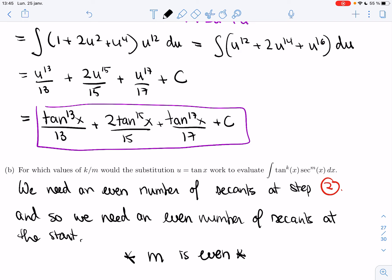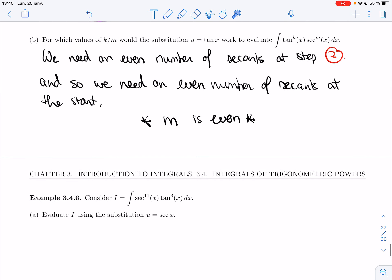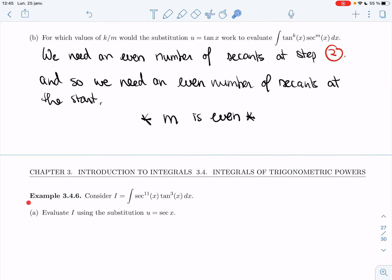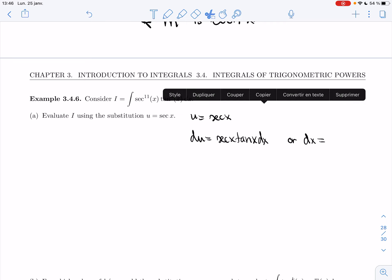And so we need m is even. So number of secant is even. Let's do one where the number of secant is odd. So I want to look at example 3.4.6. I want to consider the integral of secant to the 11x tan cubed x dx. I want to evaluate I using the substitution - in this case we'll take u equals secant. So I'm going to take u equals secant of x. Du will be secant x tan x dx. So dx is 1 over secant x tan x du.